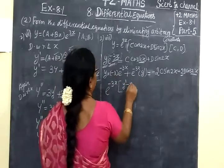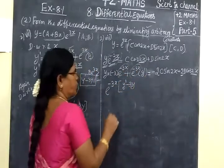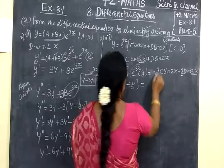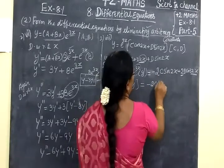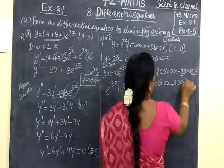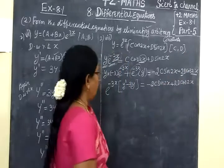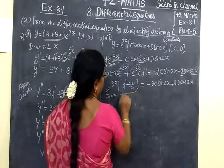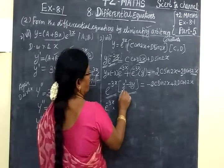So y dash minus 3y equals e^(-3x) times (−2C·sin2x + 2D·cos2x). Here also e^(-3x) — take it outside. Then y dash minus 3y equals the inner expression. After that we differentiate again. Since there are 2 arbitrary constants we must differentiate once more. Applying UV method again: first function into differentiation of second function — giving y double-dash minus 3y dash — y dash not here, y double-dash.